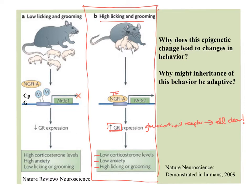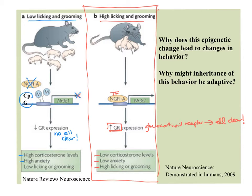When they grow up to have their own pups, they will display high licking and grooming activity because the transcription factor is able to bind to the promoter and turn on the glucocorticoid receptor. In contrast, rats showing low licking and grooming behavior toward their offspring — these rat pups are somewhat neglected. The consequence is methylation of the CpG islands in the promoter of this gene, so the transcription factor can no longer bind. We don't have transcription of the glucocorticoid receptor, making it hard for the cells to signal all clear. These rat babies have high stress hormone levels, high anxiety, and when they grow up, they show low licking and grooming behavior, repeating the cycle.